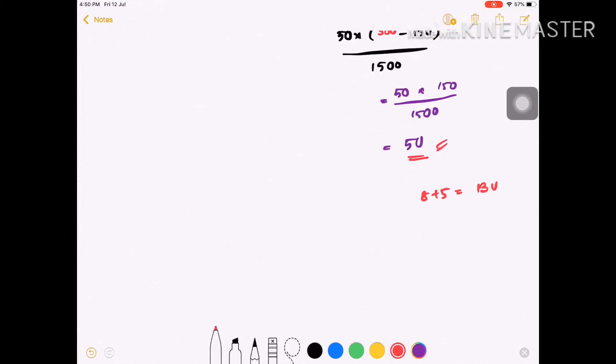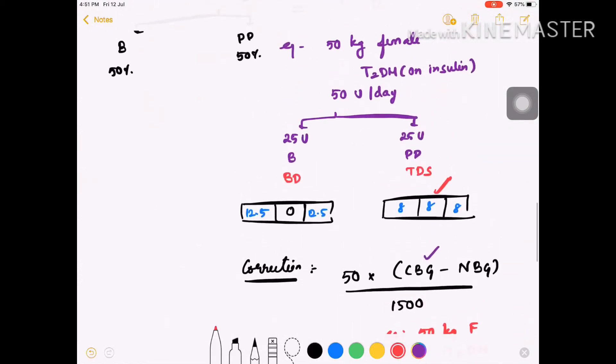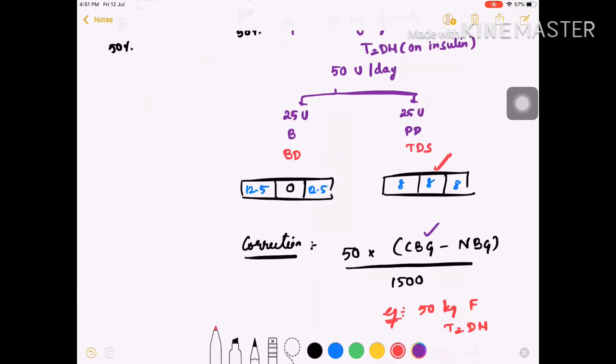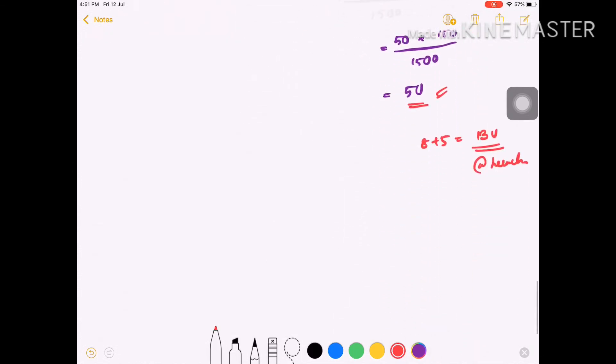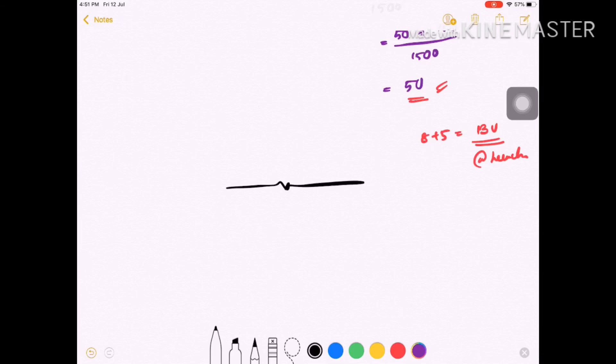If there's a night CBG of 350, the same 5 units will be added to the night 8 units for a total of 13 units at night. Content taken from Helisense, thank you.